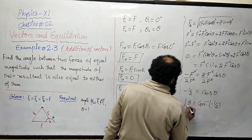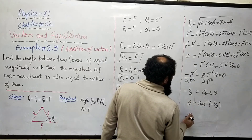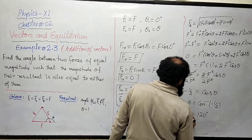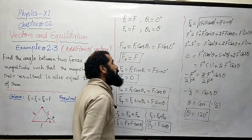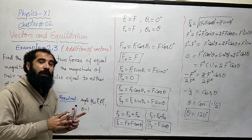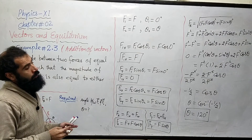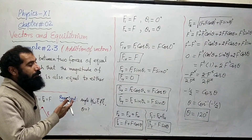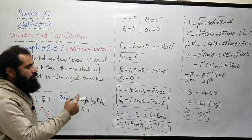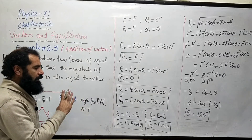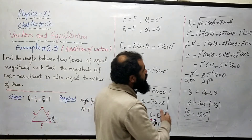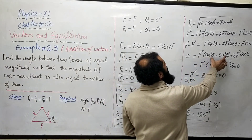Yahaan se mera theta aa gaya: 120 degree. Yeh hum keh sakte hain ke jab do vectors aise pade hon ke un ke darmiyan angle 120 degree ho aur woh aapas mein magnitude mein same hon, to resultant bhi exactly magnitude mein un ke equal hoga. Is tarike se yeh problem solve kar sakte hain.